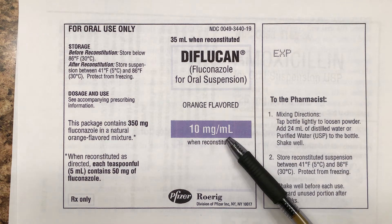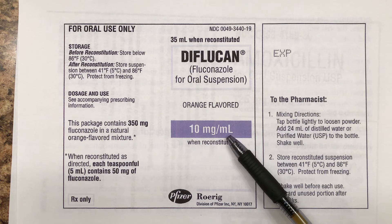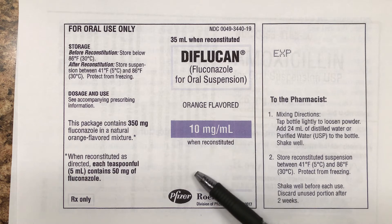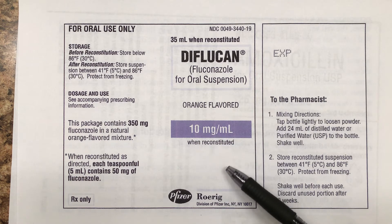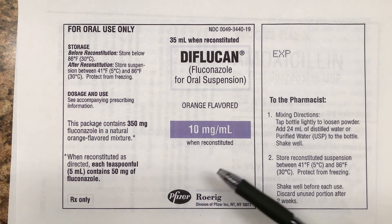On most of these from now on, I'm not going to do a dosage calculation problem, but you can do them yourself. Whatever the order is, you put the order over one, and then there's a dosage strength. You put the 10 milligrams on the bottom, the one milliliter on the top, and you do the dosage calculation.